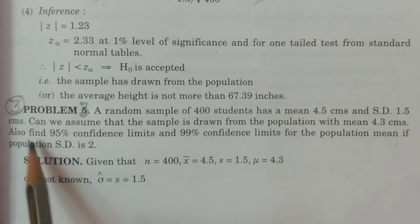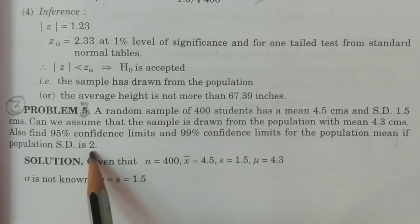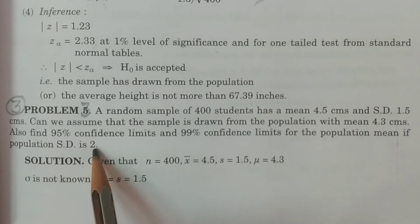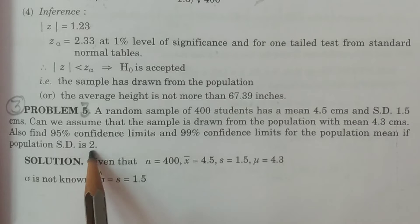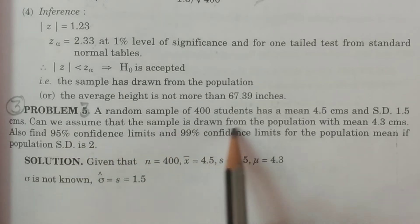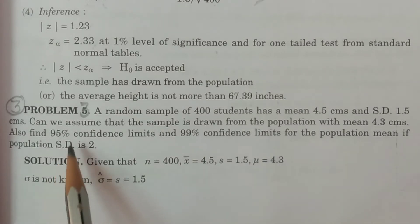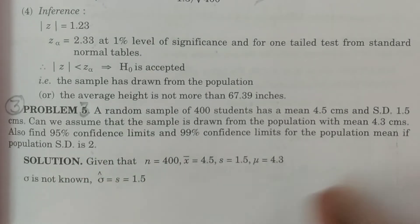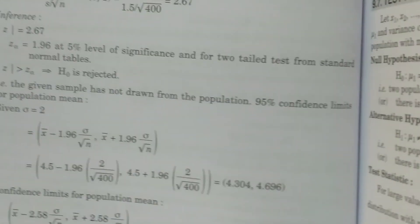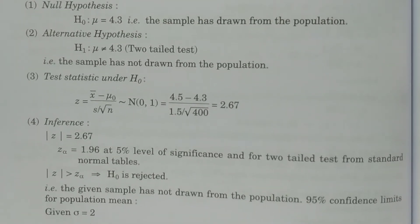The problem also asks to find 95% and 99% confidence limits for the population mean if the population standard deviation sigma is 2. So there are two questions: Question 1 — test whether the sample is drawn from the population with mean 4.3 cm; Question 2 — calculate 95% and 99% confidence limits when sigma = 2. We do question 1 first, following the steps: null hypothesis, alternative hypothesis, test statistic under H₀, and comparison/conclusion.